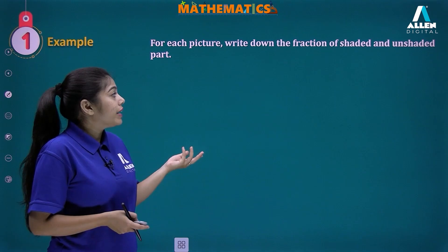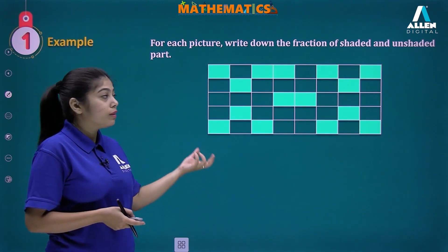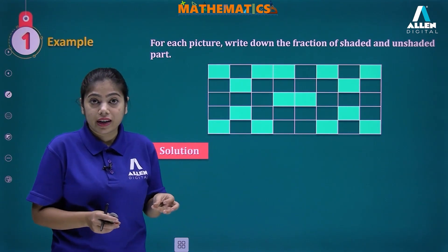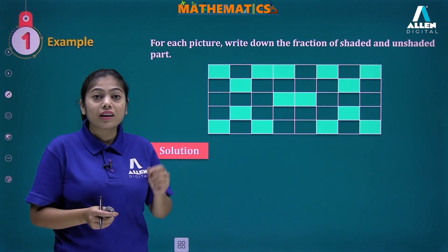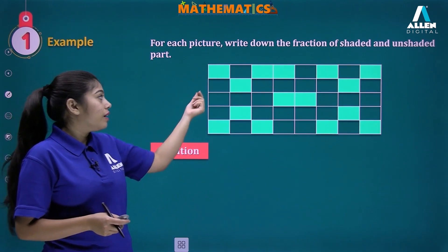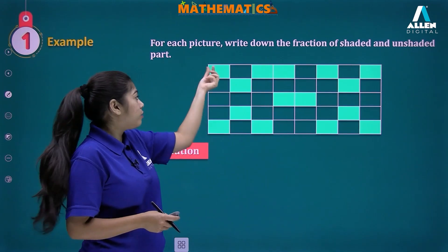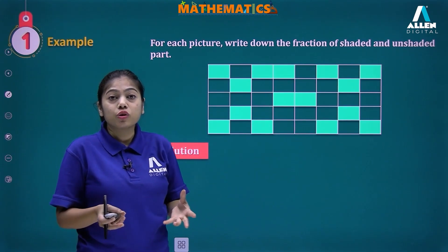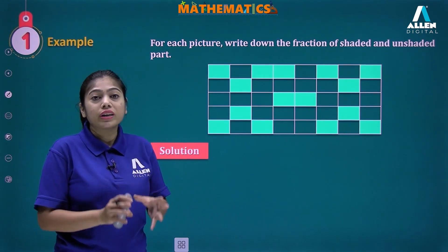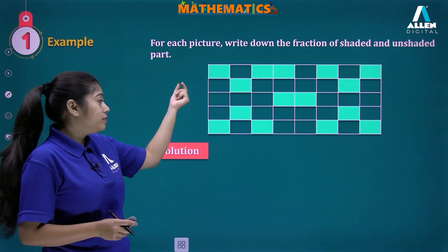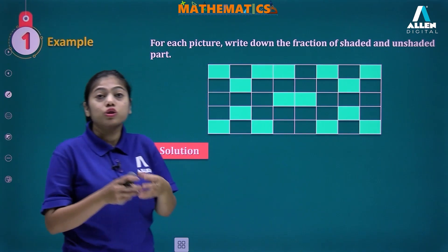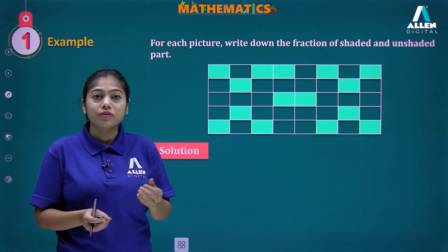The question says: for each picture, write down the fraction of shaded and unshaded parts. The picture shows one complete rectangle divided into many small identical rectangles. Counting: there are eight in one row and five in one column, so eight times five equals forty — there are forty total equal parts. Now let us count how many are shaded: in the first row there are fourteen, and in total there are fifteen shaded parts.